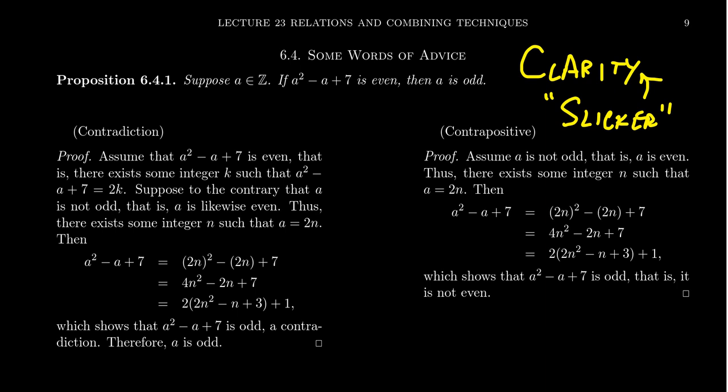These are what we want. We want a clear proof. We also don't want long proofs. Long proofs are actually usually make it less clear. And so with that said, let's compare two proofs of the exact same statement and make a decision which one we think was better. Suppose that a is an integer. If a squared minus a plus seven is even, then a is an odd number.